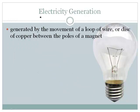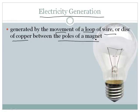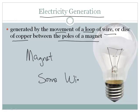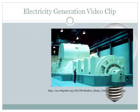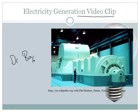Electricity generation — how do we generate electricity? It is essentially generated by the movement of a loop of wire or a disk of copper between the poles of a magnet. All you need to make electricity is a magnet and some wire. Let's do a short video clip — Mr. Bergman, taped by the esteemed Dr. Boyer — we make electricity right here in the lab.